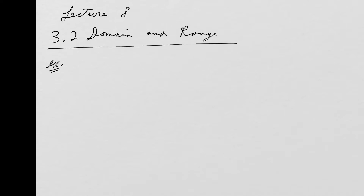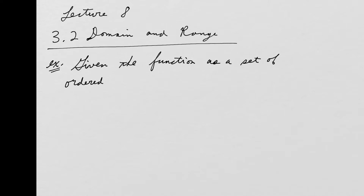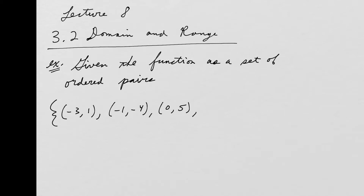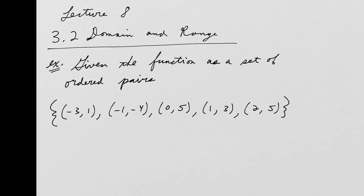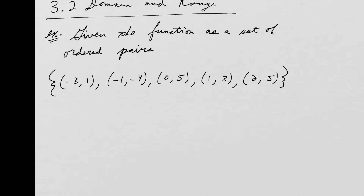Let's say you're given the function as a set of ordered pairs: {(-3,1), (-1,-4), (0,5), (1,3), (2,5)}. First of all, how do I know this is a function? Remember, any set of ordered pairs is a relation. As long as the x-values, the input values, do not repeat — in this case they're all distinct — therefore, it is a function.